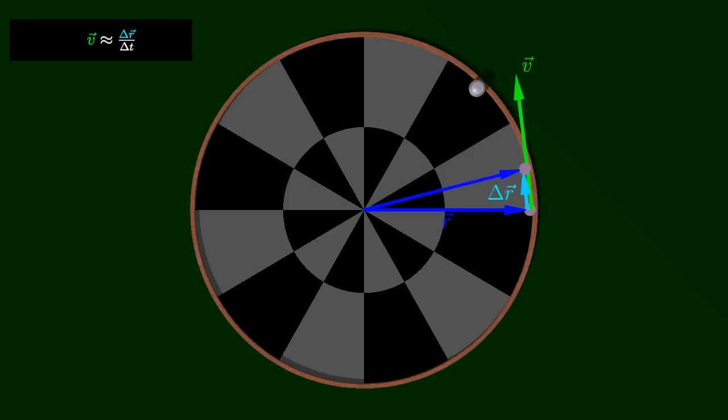The instantaneous velocity is then the limit of this estimate as the length of the short time interval goes to zero.